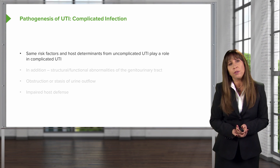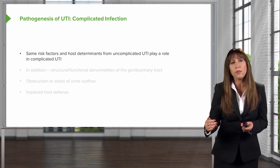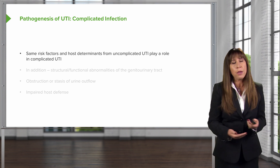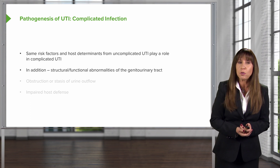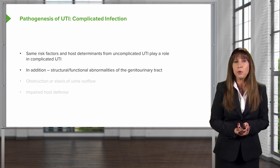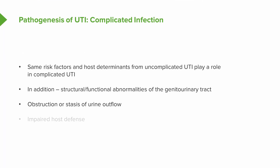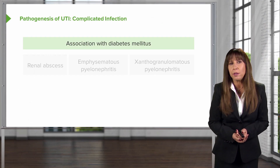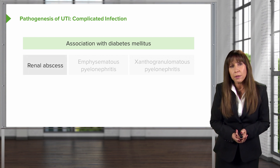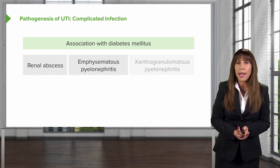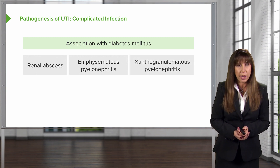In a complicated infection, the same risk factors from uncomplicated UTI still apply, but in addition these patients often have a structural or functional abnormality of the genitourinary tract. They can have obstruction or stasis of urine outflow, or impaired host defenses — such as in immunosuppressed patients. There's also an association with diabetes mellitus; people with diabetes are more prone to renal abscess, emphysematous pyelonephritis, and xanthogranulomatous pyelonephritis, which we'll discuss later.